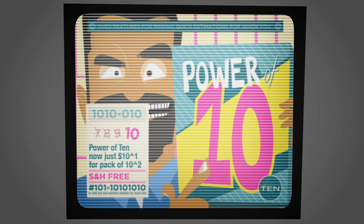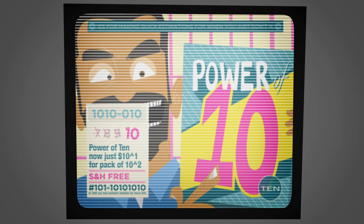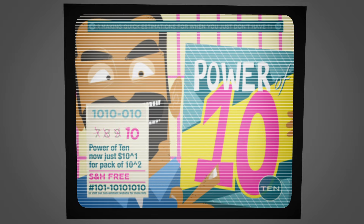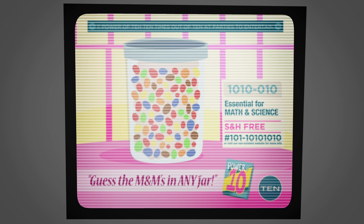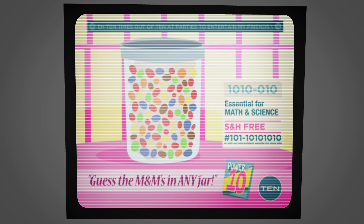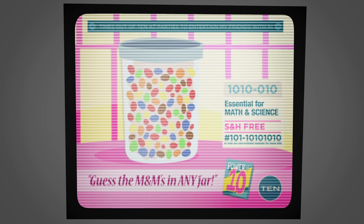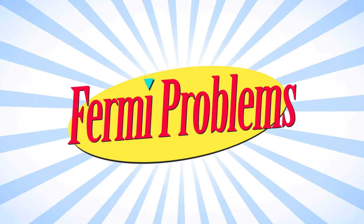The ability to use the power of 10 as an estimation tool can come in handy every now and again, like when you're trying to guess the number of M&Ms in a jar, but is also an essential skill in math and science, especially when dealing with what are known as Fermi problems.